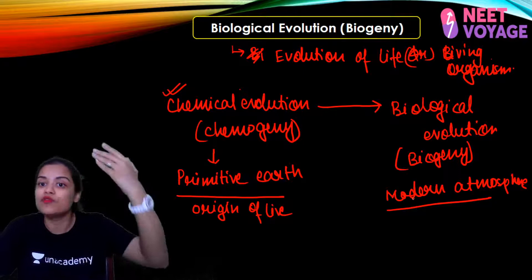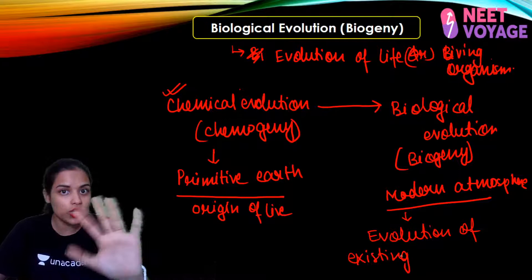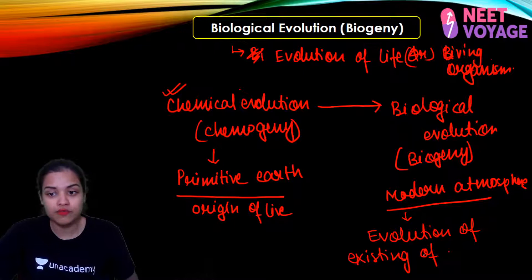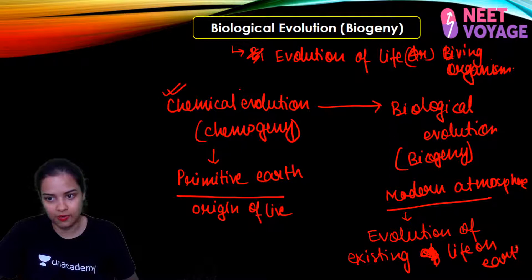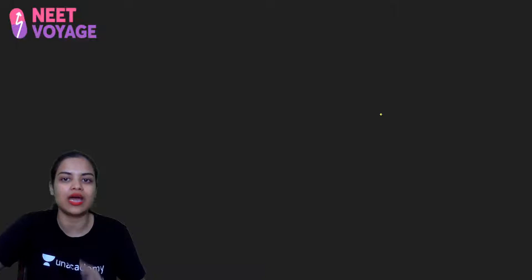What is possible now? Life has already come. Evolution of existing life is going on — it is not the origin of any new life. So it is nothing but the evolution of existing life on earth. Chemical evolution gave rise to biological evolution. Let me show this in a short tabular or flow chart form.